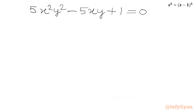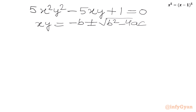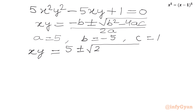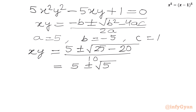This is a quadratic equation in xy. I will use the quadratic formula: xy equals minus b plus or minus square root of b square minus 4ac over 2a. Here a is 5, b is negative 5, c is 1. Substituting: xy equals 5 plus or minus square root of 25 minus 20 over 10, which gives xy equal to 5 plus or minus square root of 5 over 10. This is the value of xy.